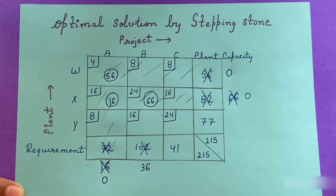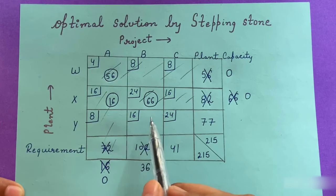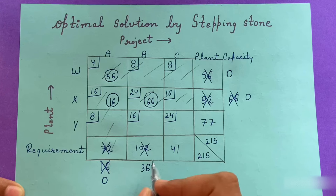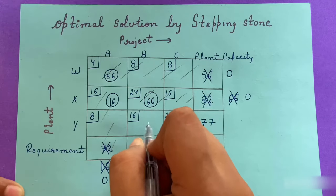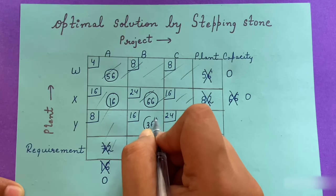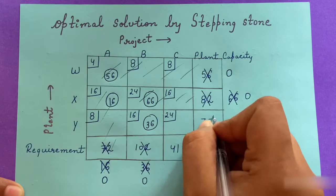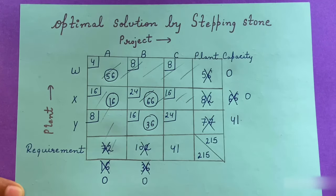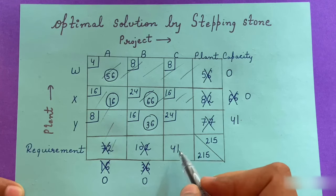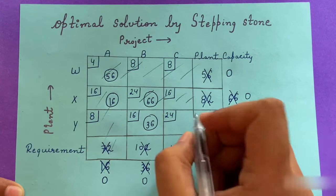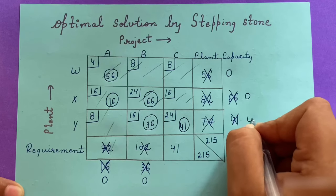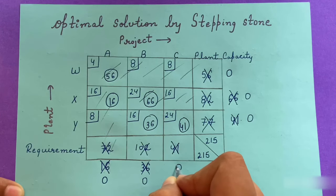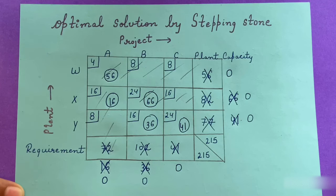We are left with only two cells. The northwest corner has a requirement of 36 units and a plant capacity of 77 units. We supply 36 units here; the requirement goes to 0 and capacity changes to 41. Finally, in the last cell there is a requirement of 41 units and plant capacity of 41 units, so we supply 41 units. Both go to 0 and we have reached a solution.